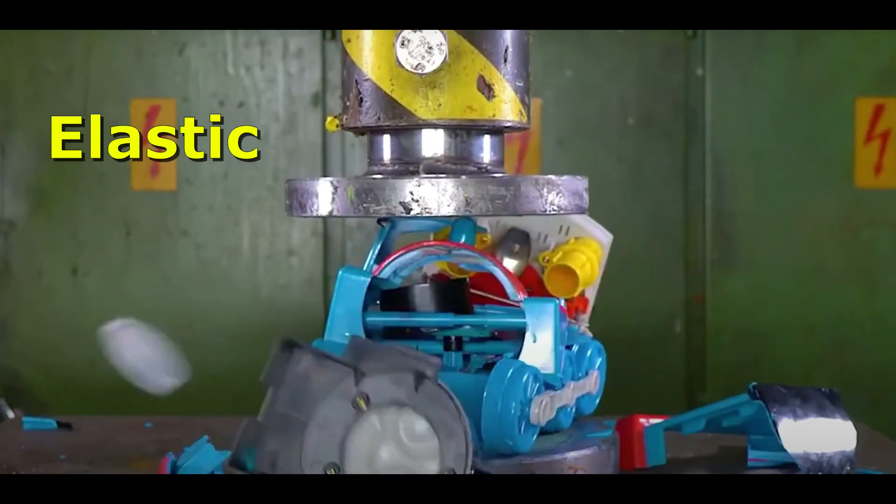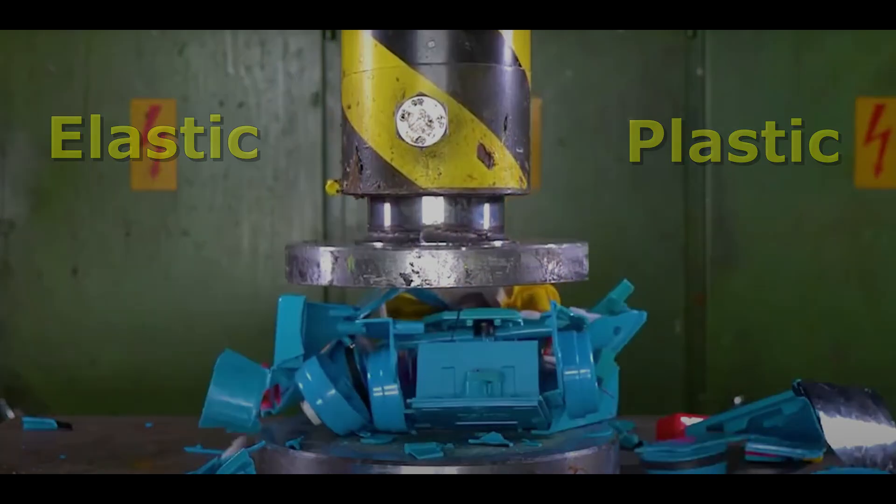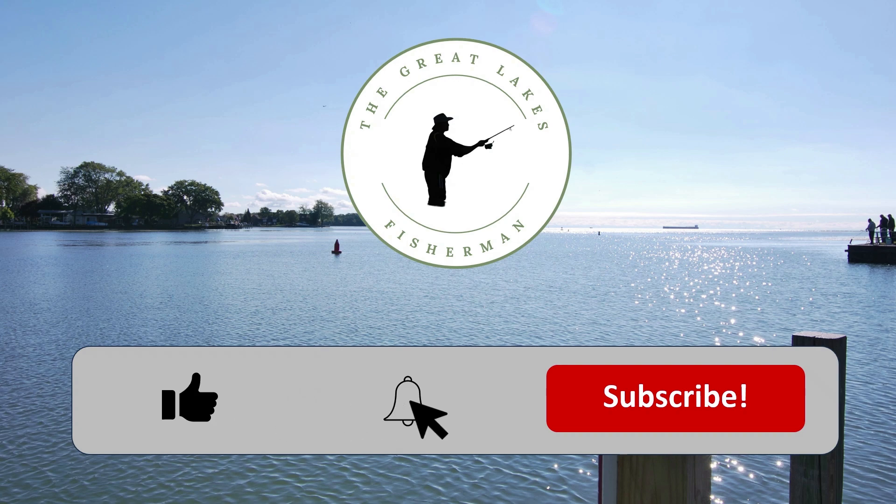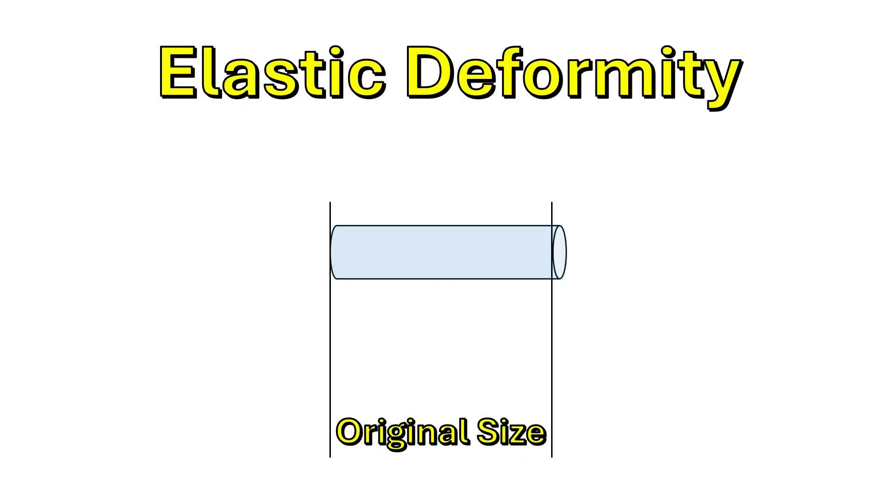These are known as elastic deformity and plastic deformity. Elastic deformity is quite simple. Stresses that are applied and then removed during the elastic deformity stage result in the material returning to its original shape and size. This deformity is effectively temporary.